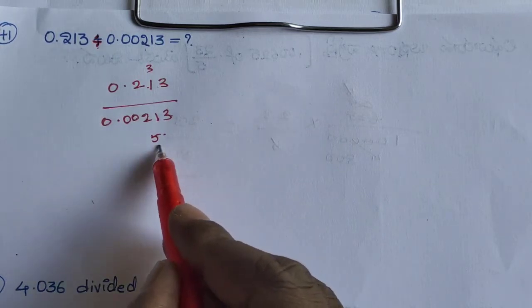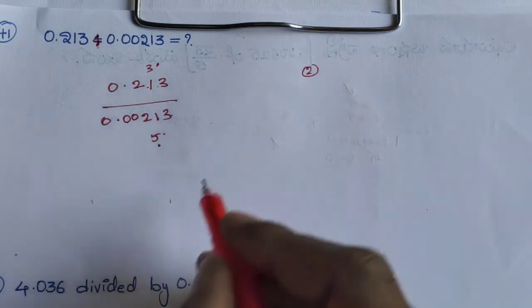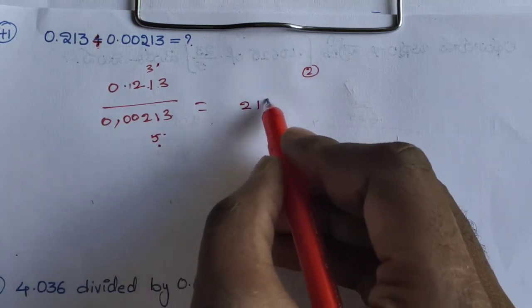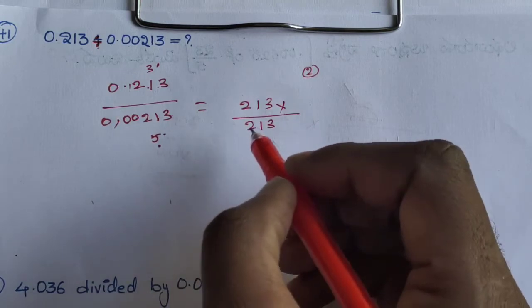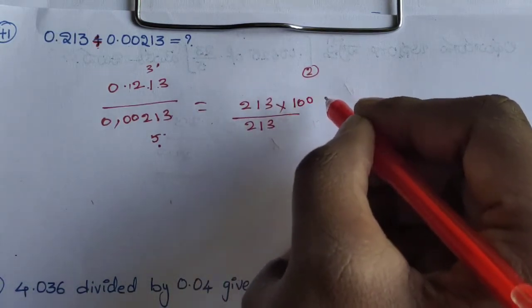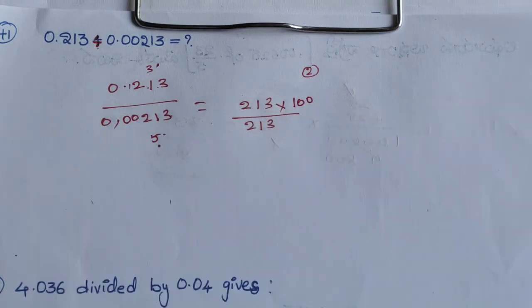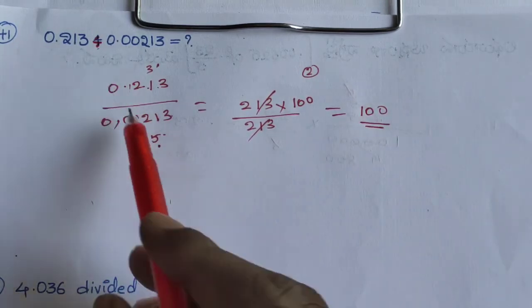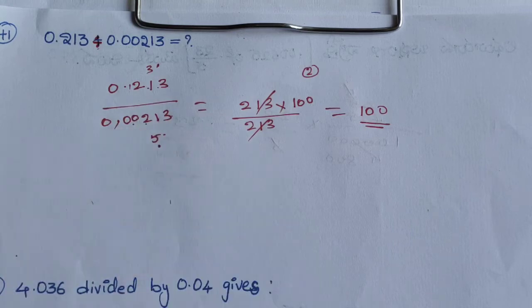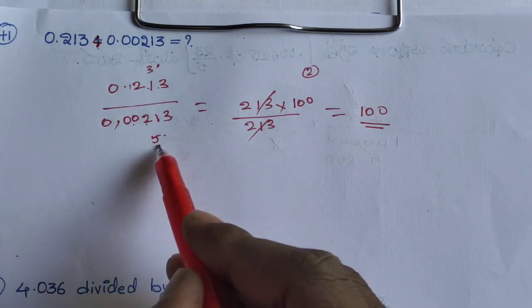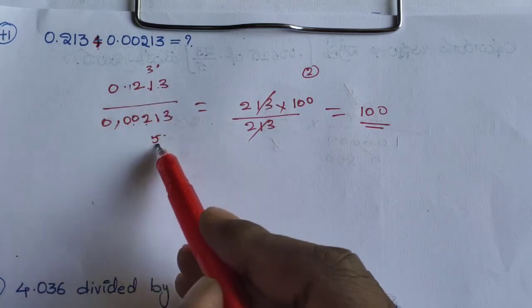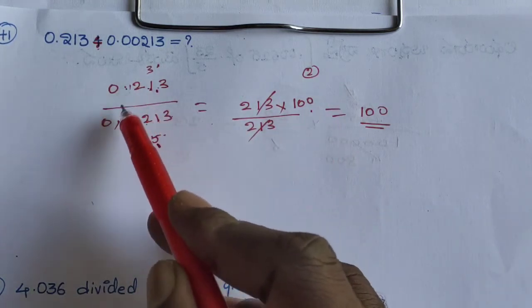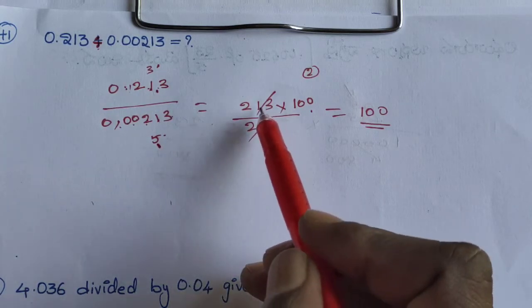0.00213. Now aligning: 0.213 and 0.00213. Adding these: 1.213 minus 0.00213 gives 1.00213. Cancel out and simplify — the answer is 100.